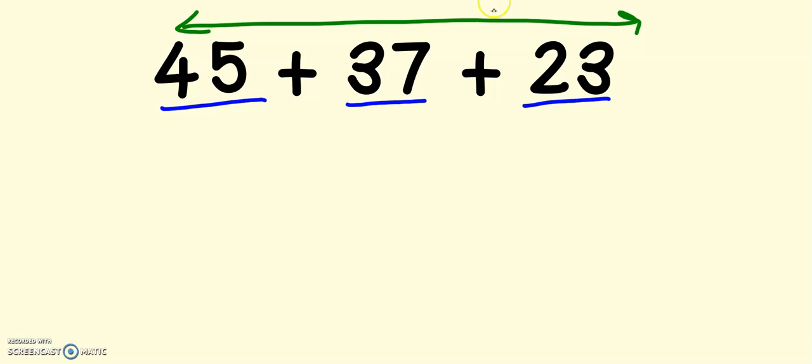And sometimes we will see problems written like this. But in order to help me add efficiently, I want to change that. I know that adding up and down makes my life a lot easier because that way I can add the ones and the tens, just like we did when there were only 2 numbers. So I'm going to take these 3 numbers and I'm going to switch them and write them up and down. Watch how I do that. I make sure I copy them exactly.